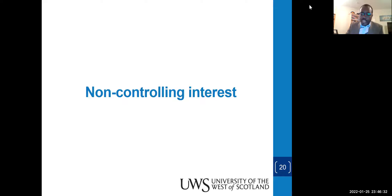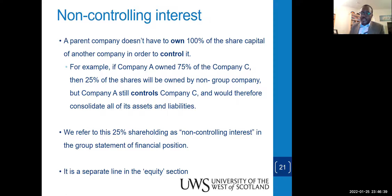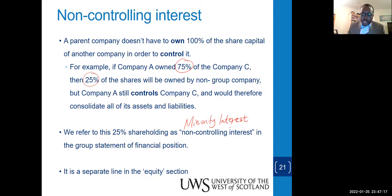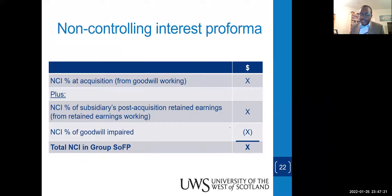There are situations where we won't control everything — we won't acquire every ordinary share of the subsidiary. Some other parties on the other end will also control a portion of it. Perhaps the parent company owns 75% and the 25% belongs to others not part of the group. We call them the non-controlling interest. Gone were the days when they were referred to as minority interest — as the standard kept updating, they changed the name to non-controlling interest. We must always create a separate line for the NCI as part of equity.